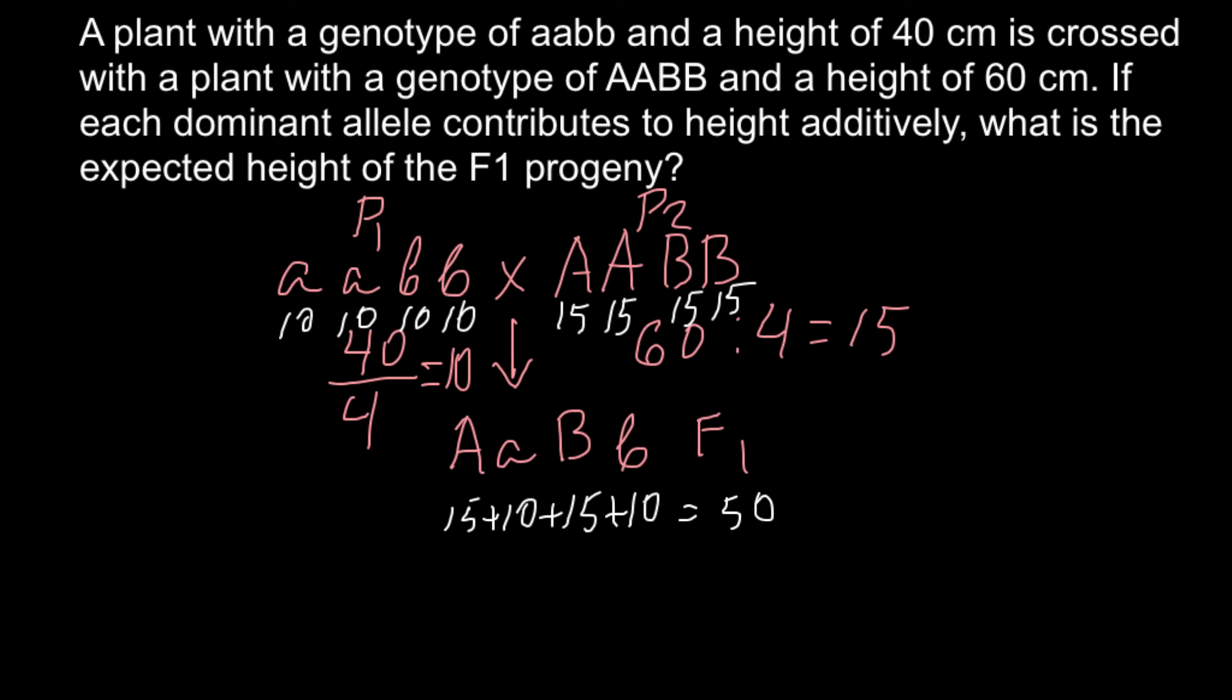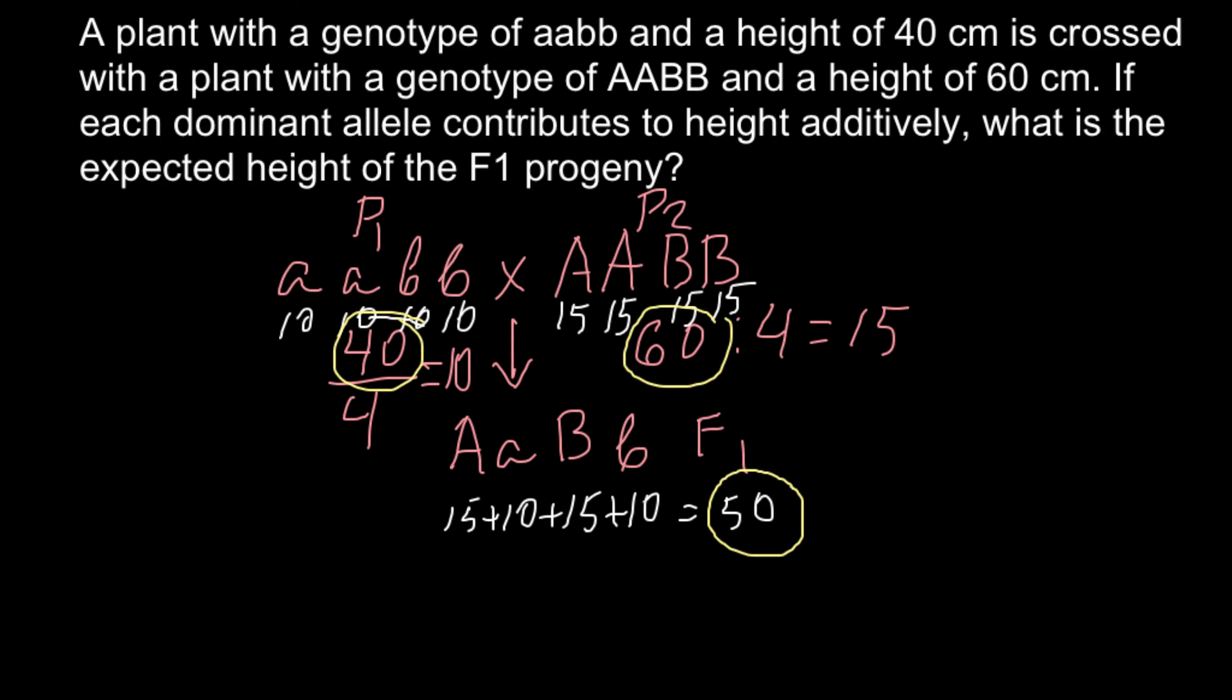So we have parent 1 that is 40 cm, parent 2 that is 60 cm, and all F1 generation is going to be intermediate height of 50 cm. This is a very simple example, but the same rules apply to more complex problems. I hope this example would be helpful for you.